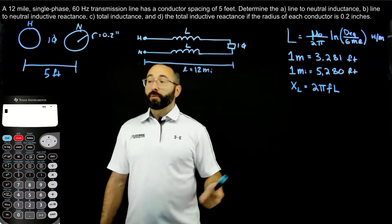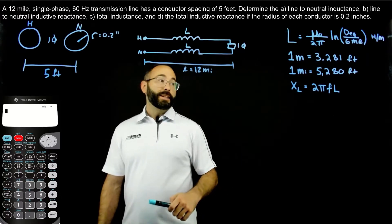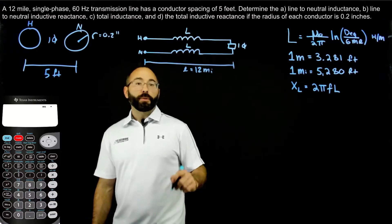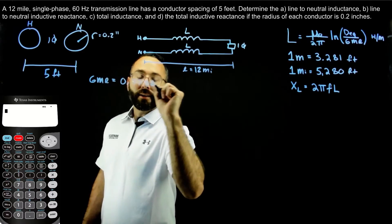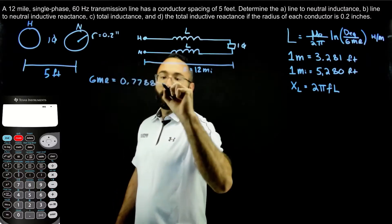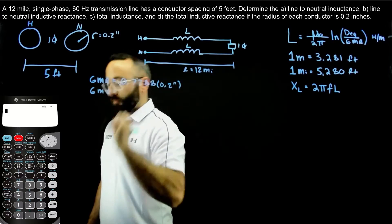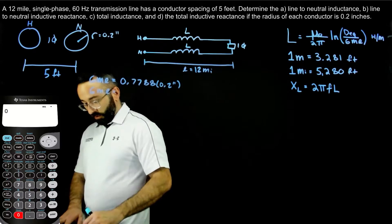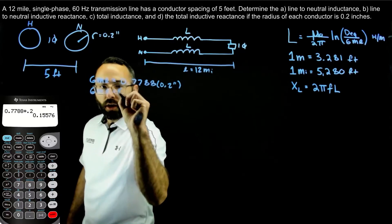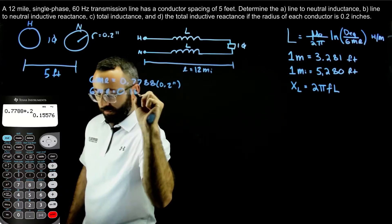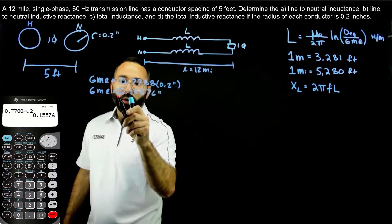The DEQ is easy. For a single-phase transmission line, that's just the distance between the hot and neutral conductor. The GMR for a solid conductor is pretty easy to calculate as well. We can calculate it using the formula: GMR equals 0.7788 times the radius. In this case, our radius is 0.2 inches.